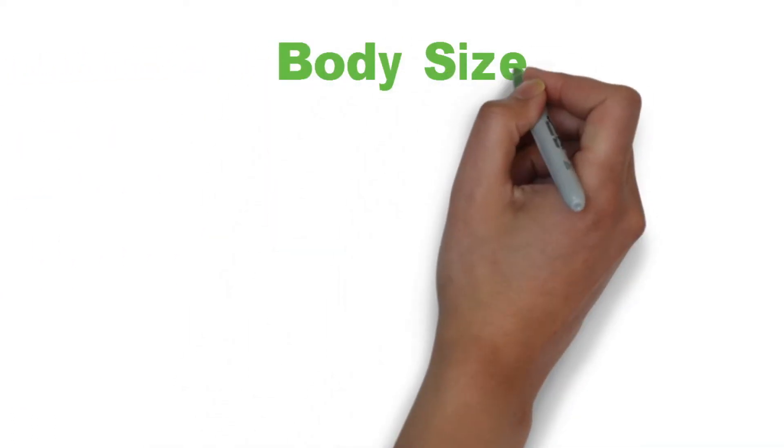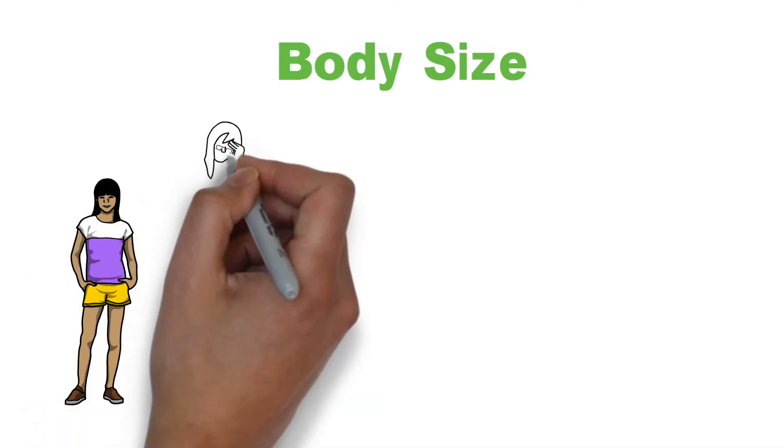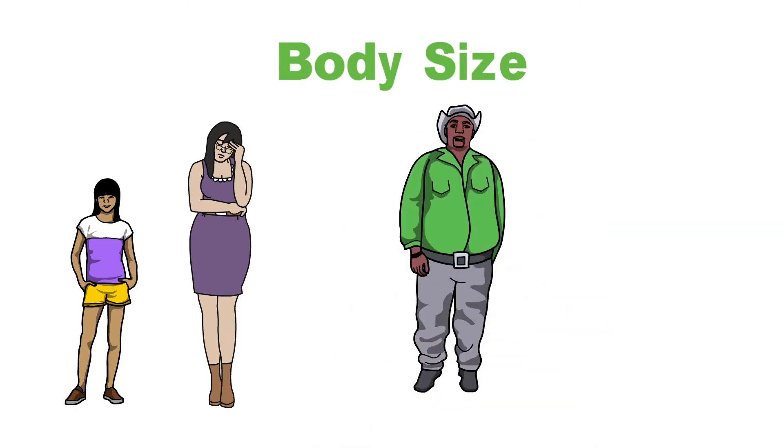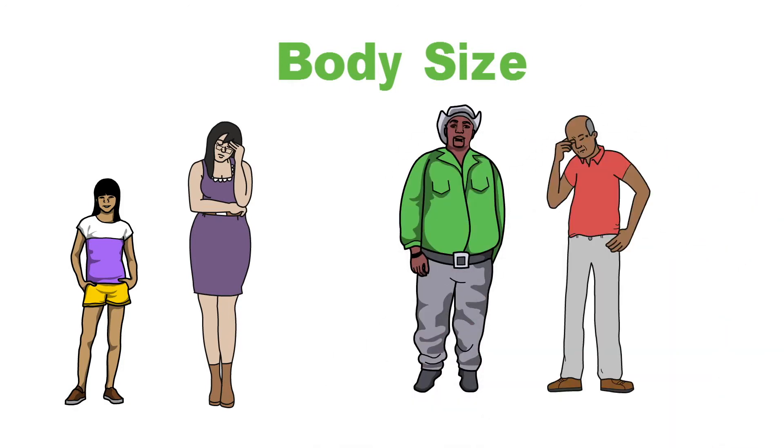You might also notice that people are different sizes. You'll see people that are shorter and taller than you. You'll probably also see people that are smaller and bigger than you. A lot of the time, people will have a size similar to their family members. For example, if someone comes from a tall family, they'll usually be tall too, but not always.